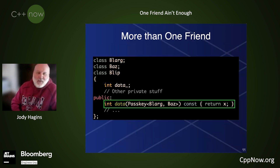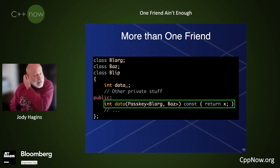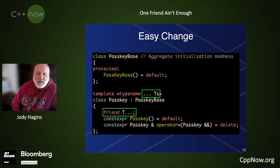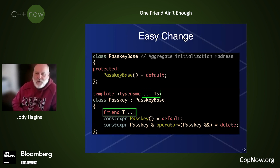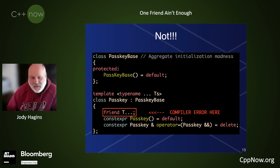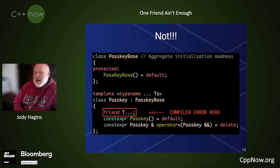So what if we want to grant access to more than one class? That seems easy enough to do — just add another type to the passkey. Here we grant a passkey for both Blarg and for Baz. Then it's easy enough to implement: we modify our passkey implementation to take variadics like we do for everything else, and then declare our friend with the T dot-dot-dot. Except that breaks, because the compiler doesn't allow you to have variadic friends. So this is sad.